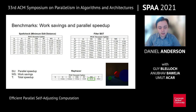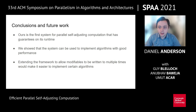For the raytracer, changing the color of one ball affects about 6% of the pixels, and change propagation saves a good amount of work. To conclude, ours is the first system for parallel self-adjusting computation that has runtime guarantees as well as good practical performance. Interesting future work includes extending the framework with fewer assumptions, such as allowing modifiables to be written to multiple times in the same computation, which would make some algorithms easier to implement.